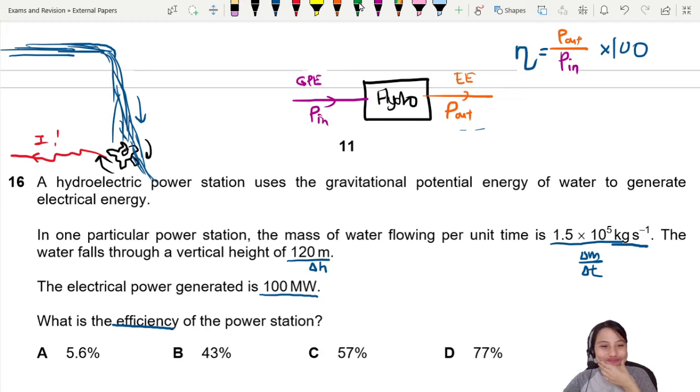So output is the electrical power generated. Oh, very good. They give us value. So this is 100 megawatt. Okay. Input. How do we find that?